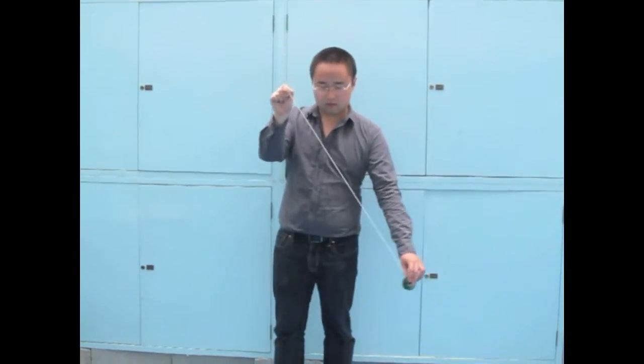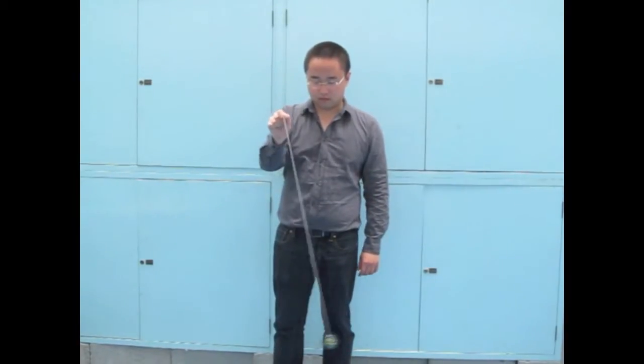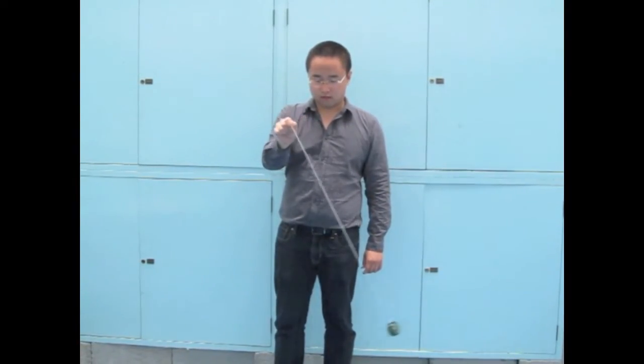When a pendulum is allowed to freely swing, it oscillates at the natural frequency, as you can see in the horizontal direction here.